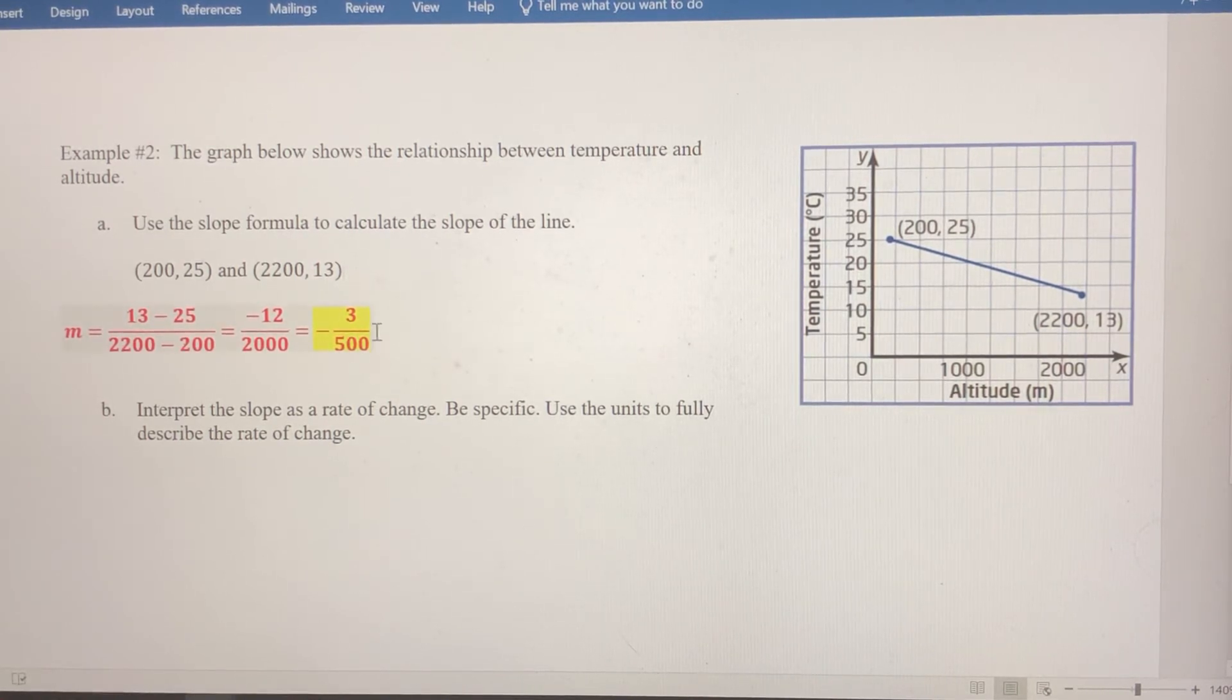So this is our slope, but let's interpret that as a rate of change. So remember, the slope is negative 3 over 500. As a rate of change, and using units,